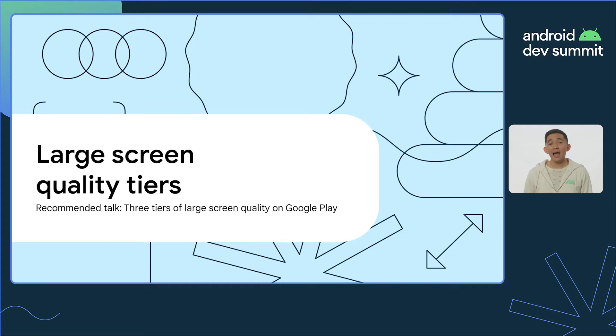Google has already done a lot of the heavy lifting to enable keyboard and mouse support in apps, but there are a few things you can do to make your app stand out. Let's look at some of the work needed to achieve different levels of quality when it comes to physical input to support your app. In this talk, we'll focus on large screen input. To learn more about other things discussed in the quality tiers, check out the talk, Three Tiers of Large Screen Quality on Google Play.